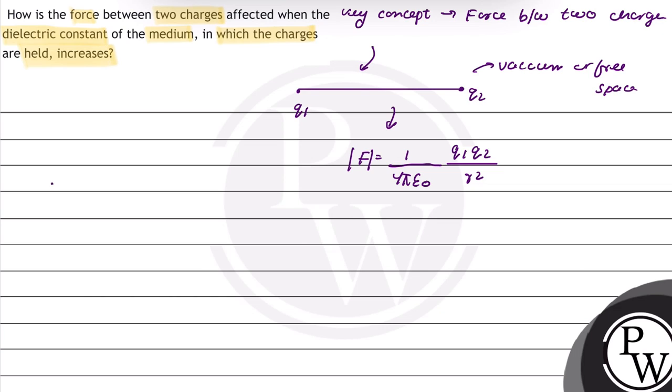When this similar system of charge q1 and q2 is placed in a medium which has dielectric constant k, the force magnitude will be 1 upon 4 pi epsilon q1 and q2 upon r square.